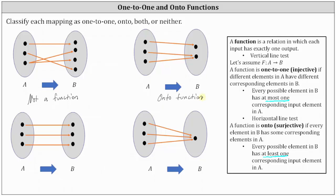Looking at the next mapping, we again have a function. There are three elements in B, each of which has exactly one corresponding input element in A. Since all elements in B have exactly one corresponding input, this function is both one-to-one and onto. Having exactly one corresponding input meets the requirement of at most one as well as at least one, so this mapping is a one-to-one and onto function.